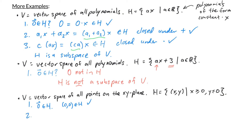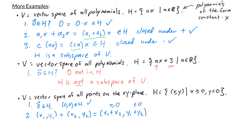For the second condition, is H closed under vector addition? Take two arbitrary points in H: (x₁, y₁) and (x₂, y₂), where x₁, x₂ ≥ 0 and y₁, y₂ ≤ 0. Their sum is (x₁ + x₂, y₁ + y₂). Since x₁ and x₂ are both ≥ 0, the first coordinate is also ≥ 0. Since y₁ and y₂ are both ≤ 0, their sum is ≤ 0. So the sum is in H, meaning H is closed under vector addition.